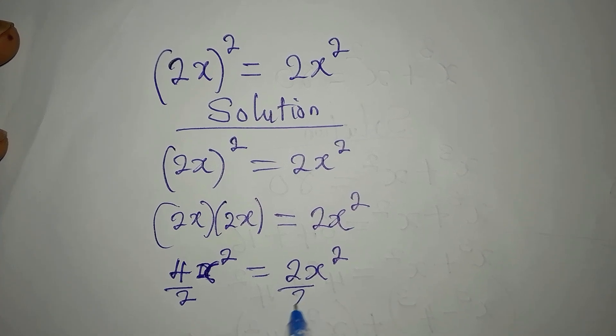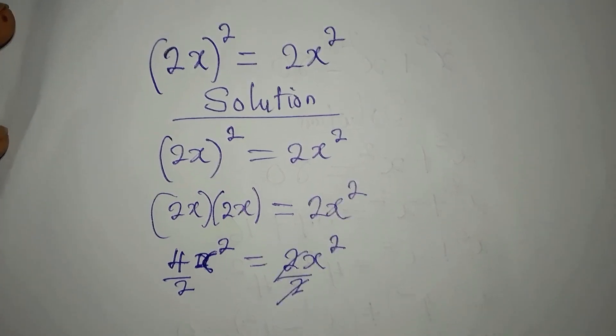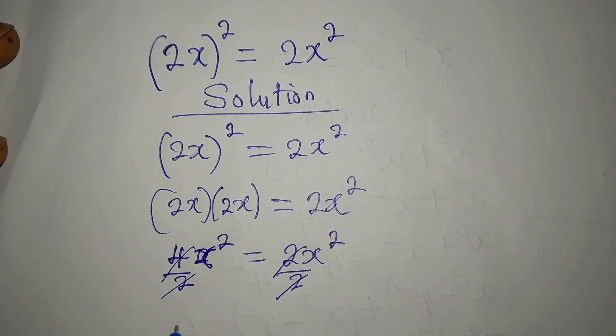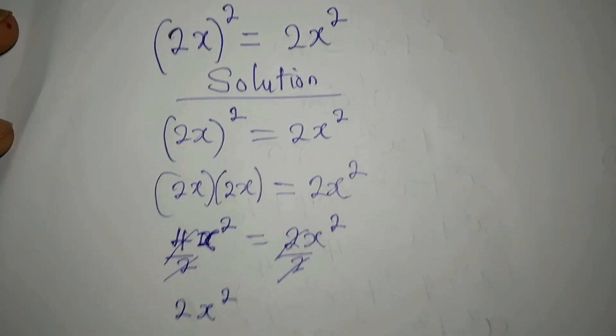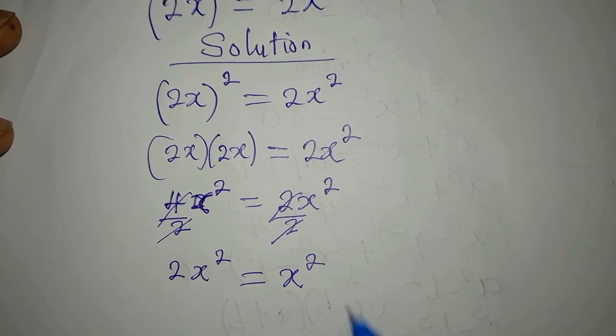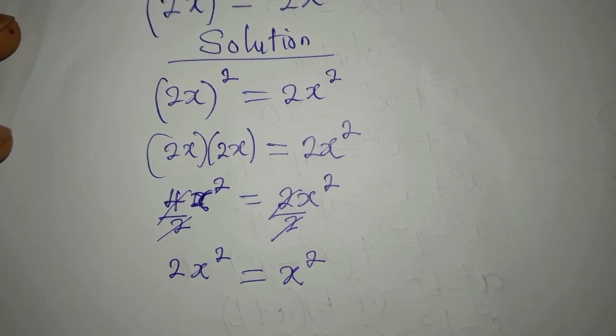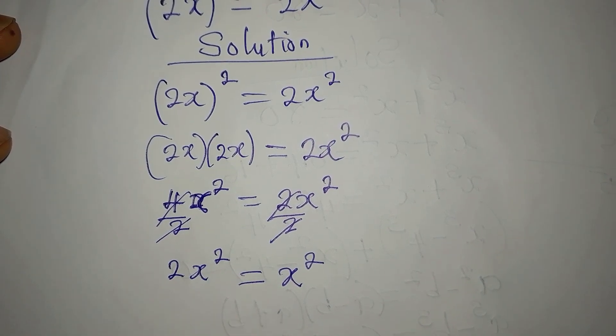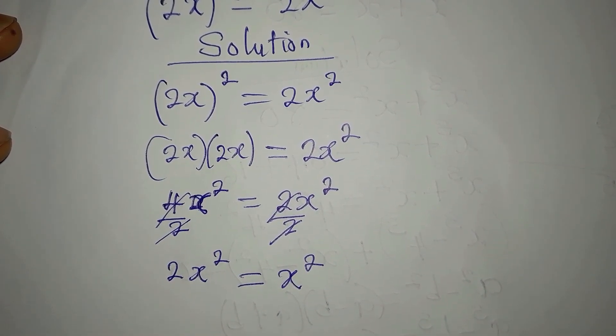And 2 into 4 will give us 2x² to be equal to x². Now do not divide by x², because if you do you cannot solve it.